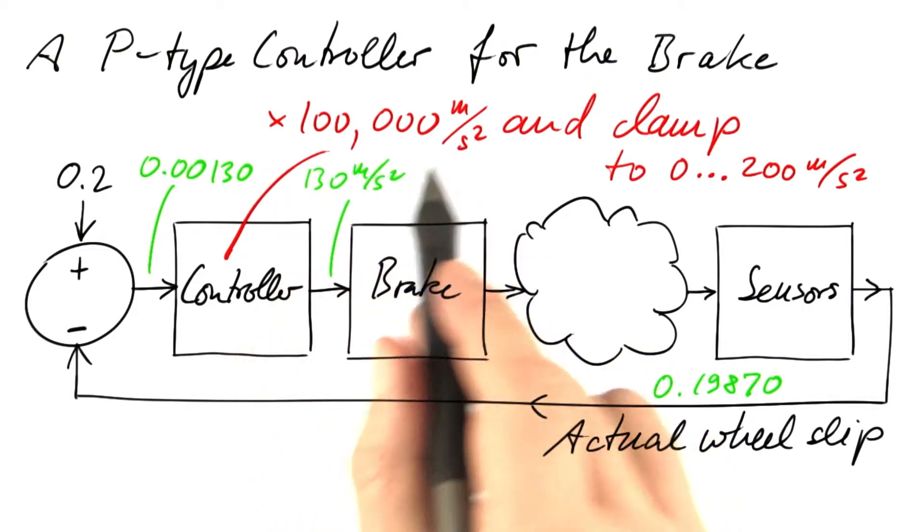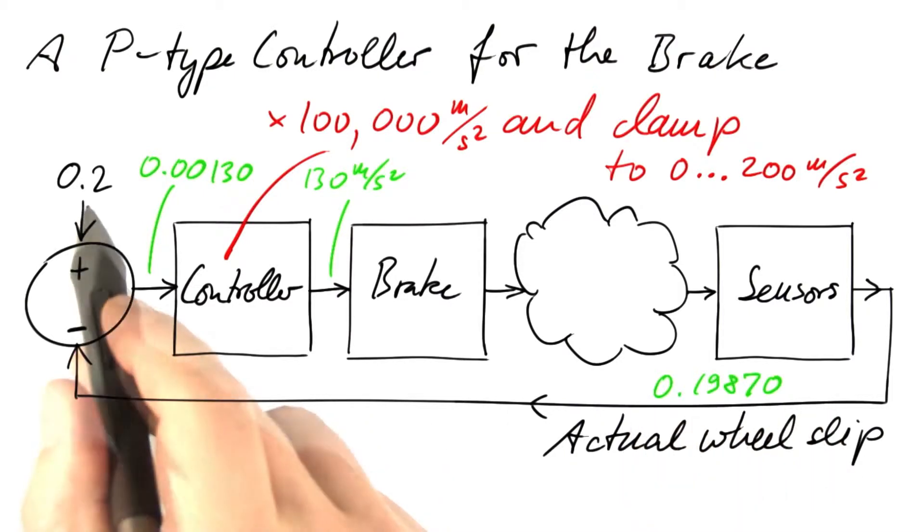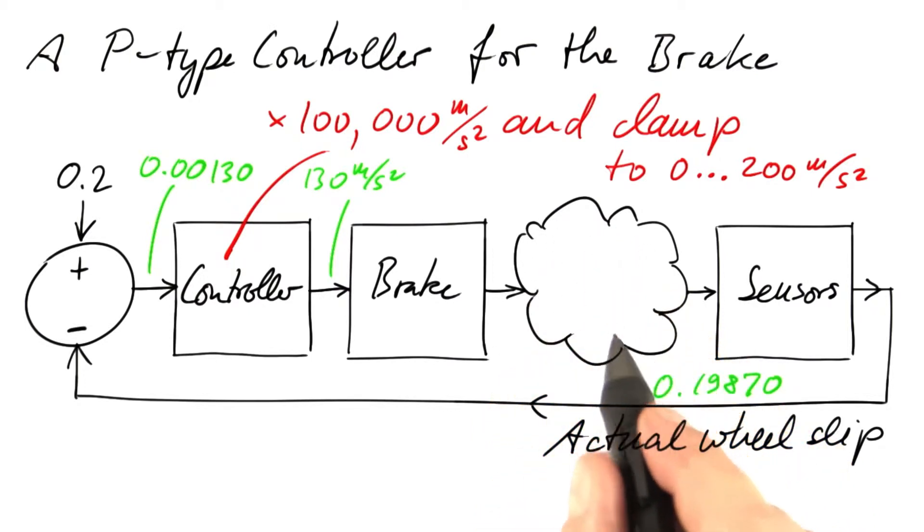One thing to note about this naive version of the P-type controller is that the value of the equilibrium is always slightly less than the optimum. If anything changes concerning the dynamics of the car or the road conditions, this actual value may change.